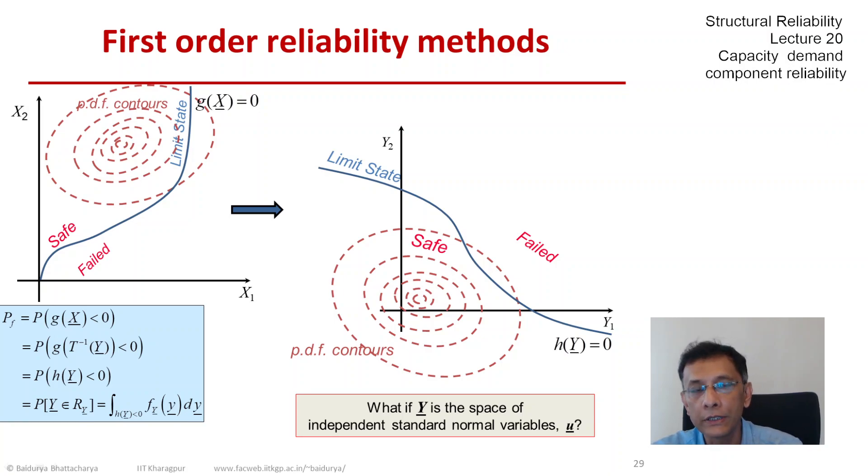Let us give a special symbol for that which would be u. What if, and this is the answer to one of the two questions that I raised in the previous slide: where do we map? What if we map into the space of independent standard normal variables?